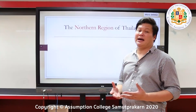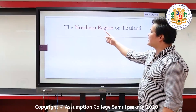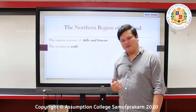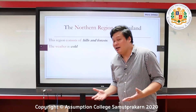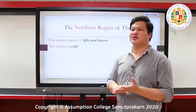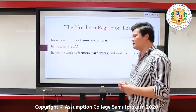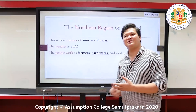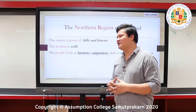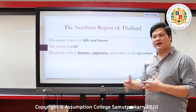Now let's discuss the northern region in detail. The northern region consists of hills and forests. That is why the weather in the northern region is cold — especially during winter, it's very cold. The people in the northern region work as farmers; they grow strawberries and mostly fruits. There are also carpenters, and they work in agriculture — growing crops like rice, and animal husbandry.